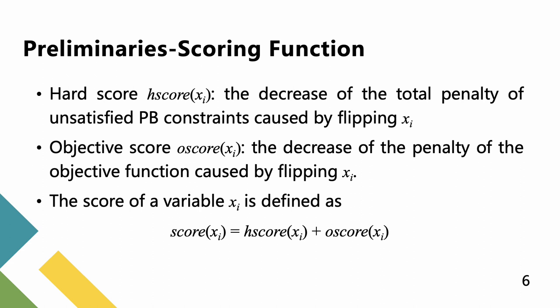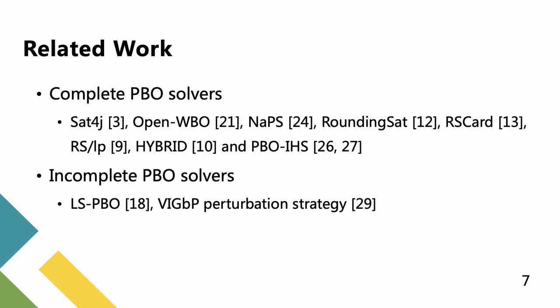After flipping some variables during the search process, the corresponding score values should be updated accordingly. Solvers for PBO can be divided into complete and incomplete solvers. Up to now, many complete PBO solvers have been proposed, such as SAT4J, OpenWBO, NaPS, RoundingSat, SCIP, CPLEX, Gurobi, and PBO-IHS.